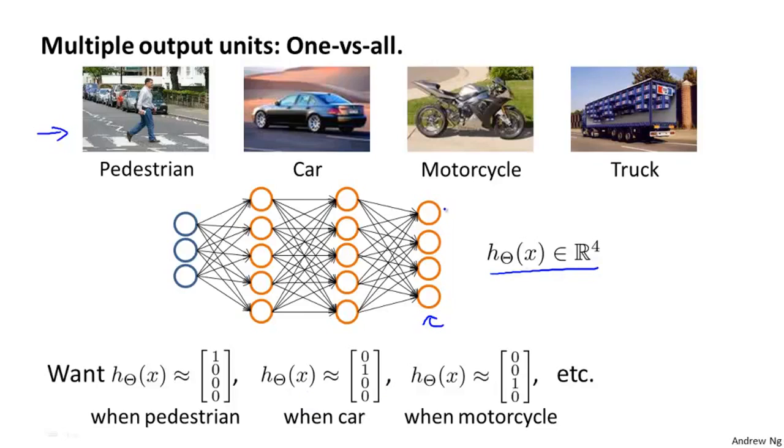And what we're going to try to do is get the first output unit to classify, is the image a pedestrian, yes or no? The second unit to classify, is the image a car, yes or no? This unit to classify, is the image a motorcycle, yes or no? And this to classify, is the image a truck, yes or no?